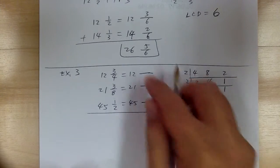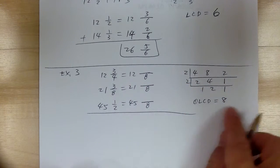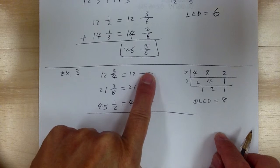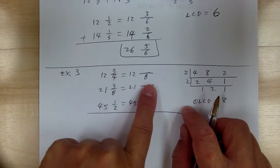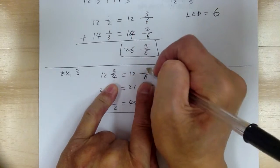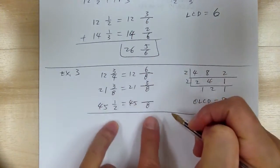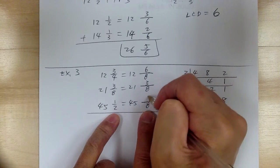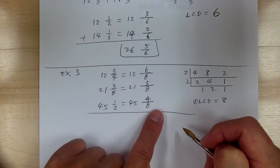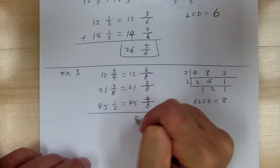That's step 1. Step 2: get your common denominator ready. Step 3: figure out what you need to multiply to get from the original denominator to 8. This one needs to multiply by 2, so you get 6. Over here, this is already 8 so don't do anything. This one needs to multiply by 4. Then add the whole numbers: 2 plus 1 is 3, plus 5 is 8.